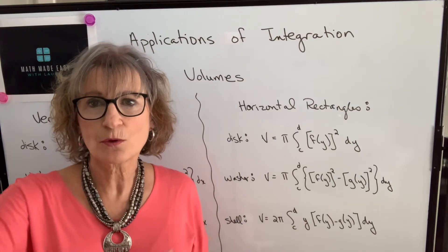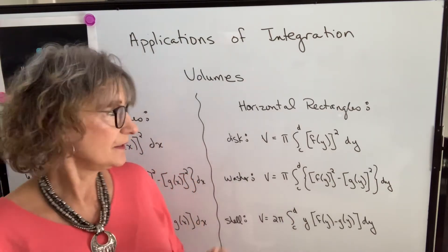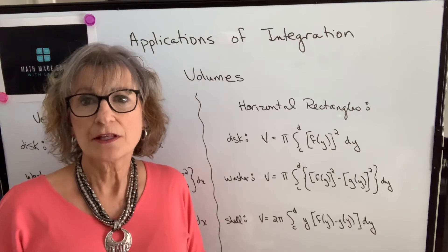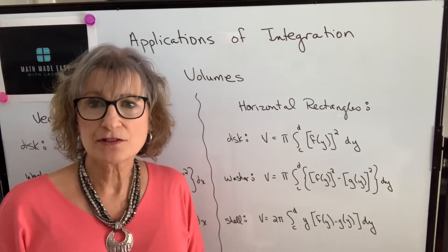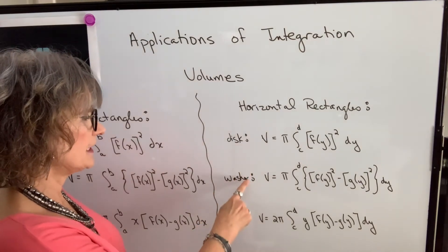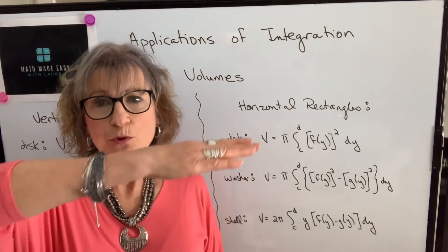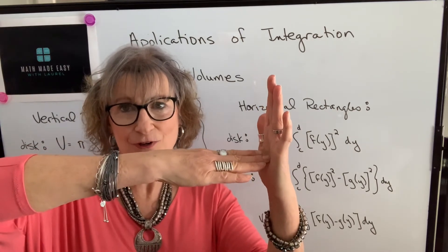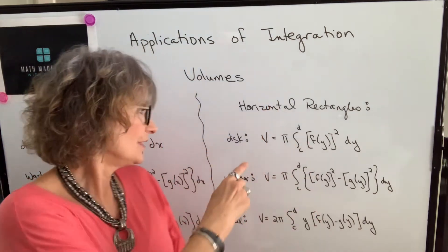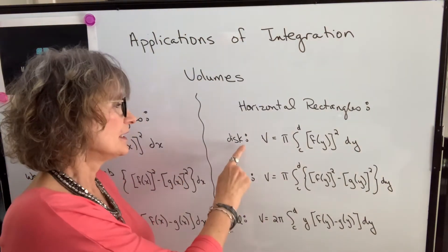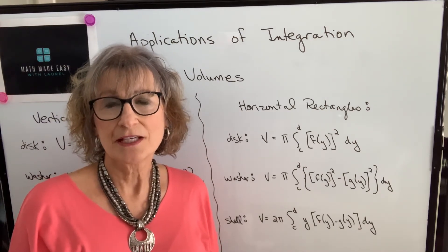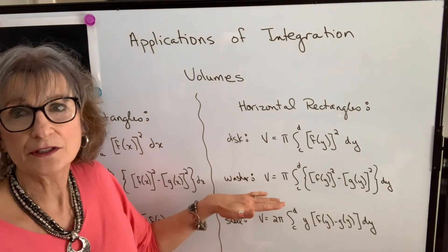Similarly, if you decide to use horizontal representative rectangles, then these are your three options for formulas. Everything is in terms of y with horizontal rectangles — the functions will be functions of y, not x, and the limits on your integrals will be y values. With horizontal rectangles you're going to use the disc or washer method if your horizontal rectangle is perpendicular to your axis of revolution — in other words, if your horizontal rectangle is rotating around the y-axis. The disc method works if the area is bounded by the y-axis and it's rotating around the y-axis. If it's not bounded by the y-axis, there's a hole in the middle, so it'll be the washer method.